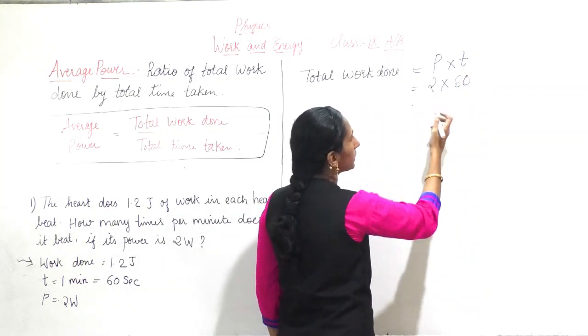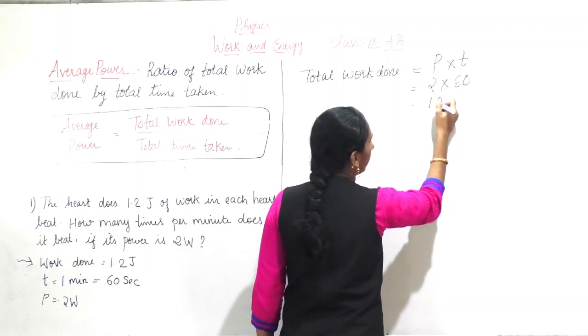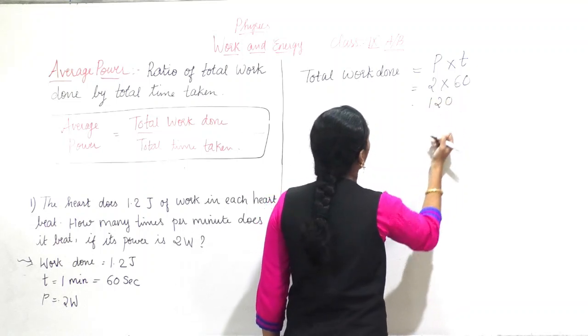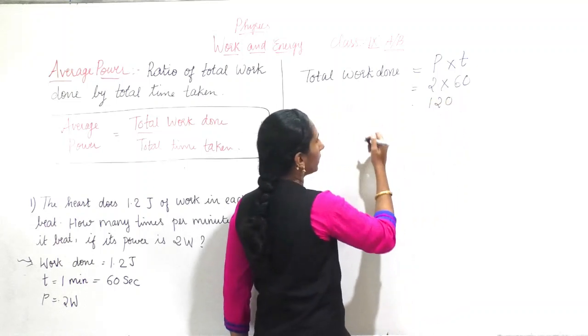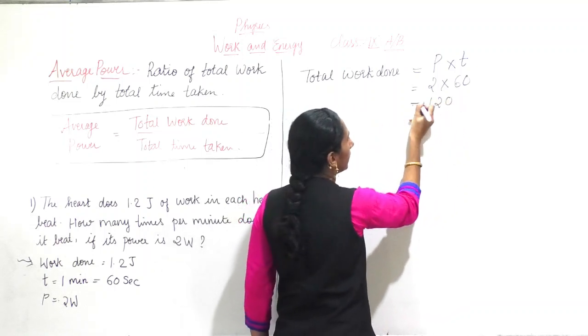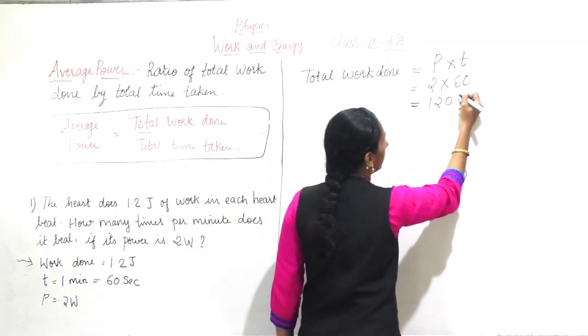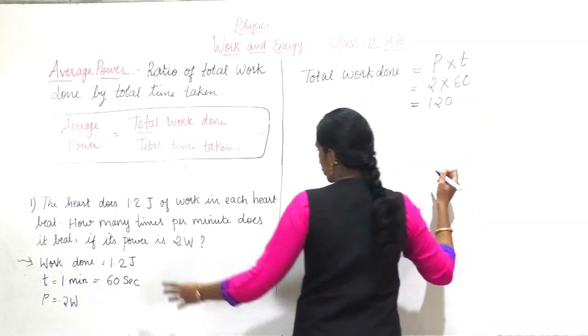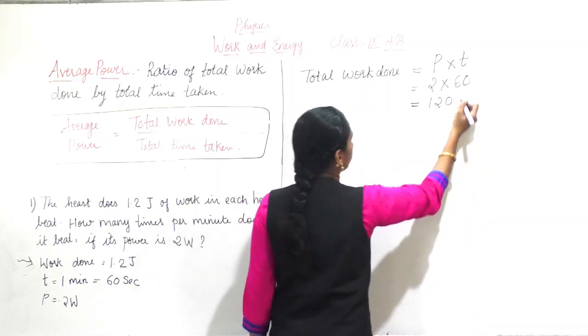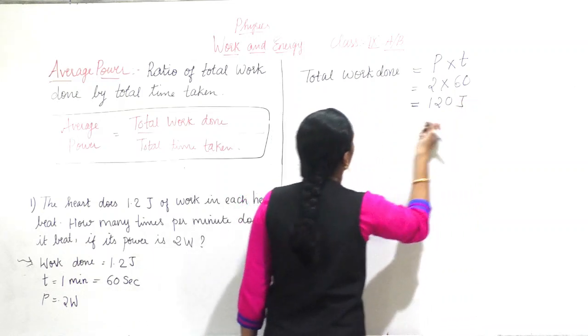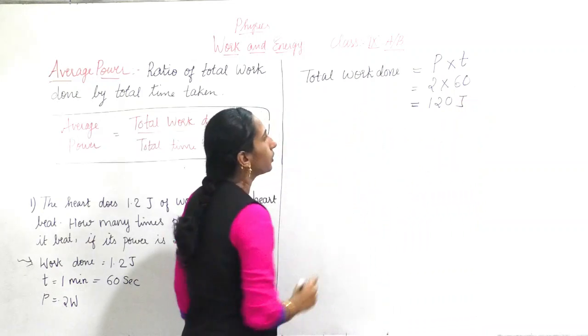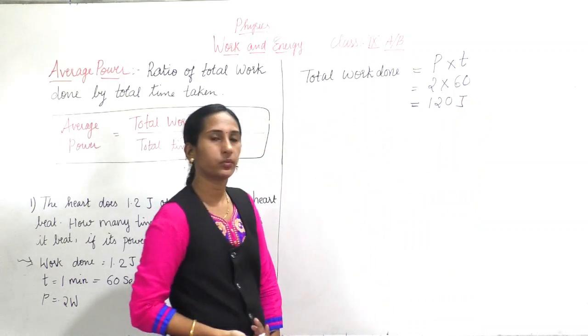So that gives us 120. Total work done is 120 joules. So now you have got the total work done.